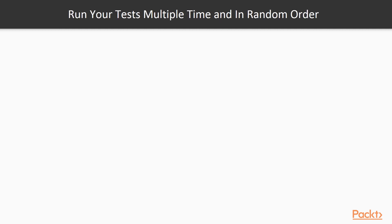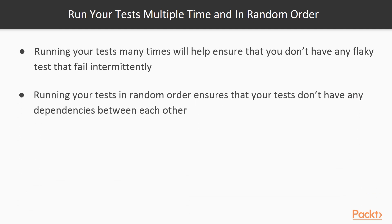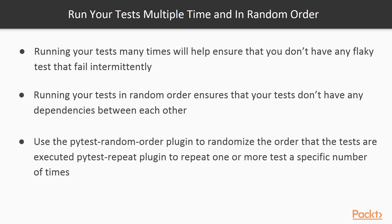Make sure you run your unit tests multiple times and in a random order. Running your tests many times will help ensure that you don't have any flaky tests that are failing intermittently. Running your tests in random order ensures that your tests don't have dependencies between each other. You can use the pytest-random-order plugin to randomize the execution of the tests, and pytest-repeat for repeating all or a subset of the unit tests as needed.